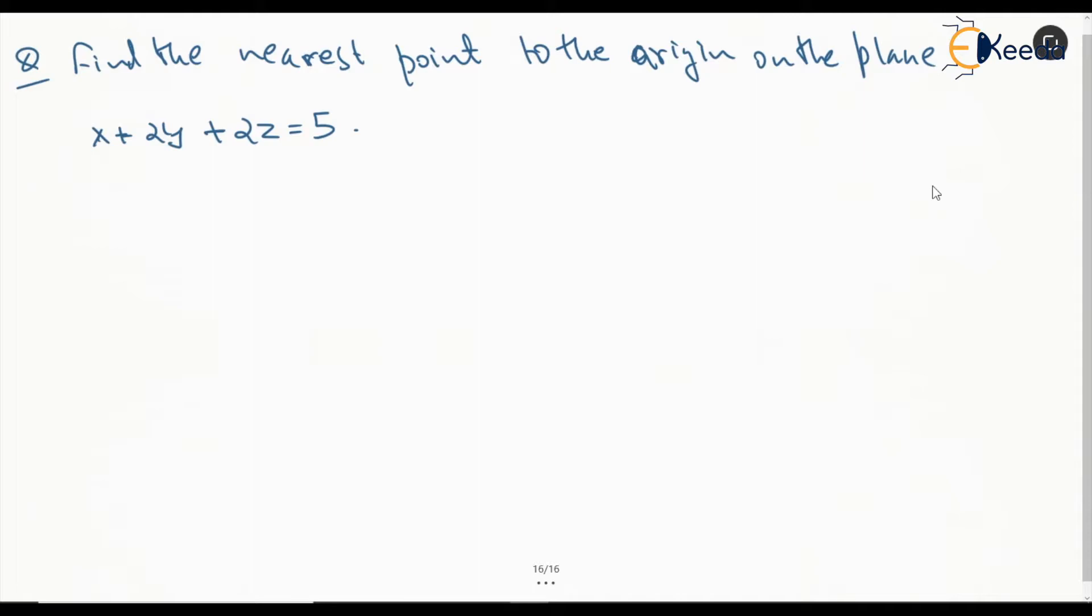Now, this is an equation of a plane as ax plus by plus cz equal to d and obviously, we can see the normal vector which we will get is 1, 2, 2.